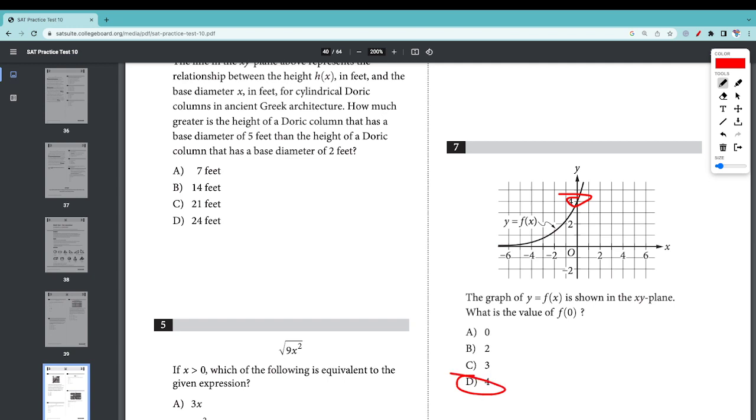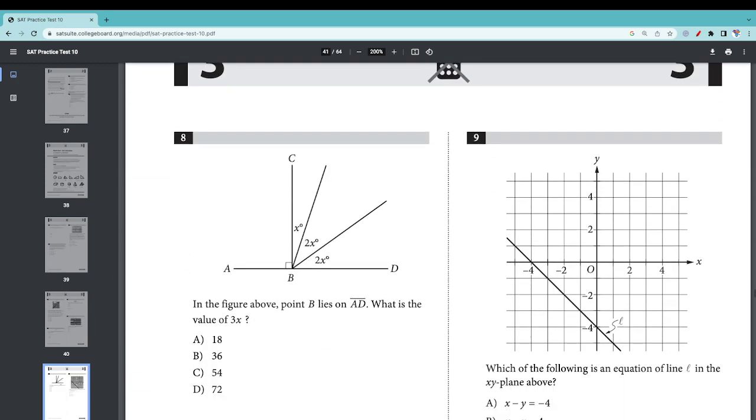Number 8: In the figure above, point B lies on line AD. What is the value of 3x? Well, if this is 90 degrees, then clearly this is also 90 degrees because 90 plus 90 is 180, and we know that this is 180 degrees. So we have 2x plus 3x equals 90, so 5x equals 90 degrees.